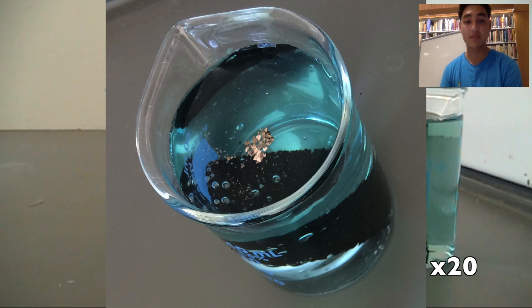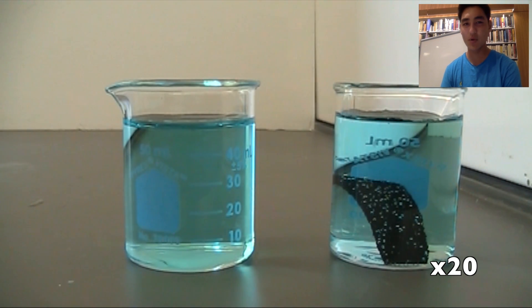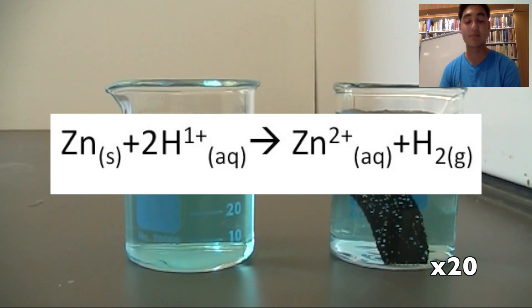The particles floating around the water in the beaker are the solid copper particles that precipitate from the reaction. But where do the bubbles come from? Our chemical reaction does not contain any gases. The bubbles occur because hydrogen gas emerges from the water.